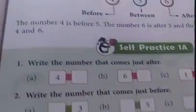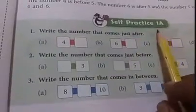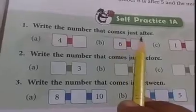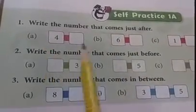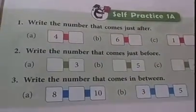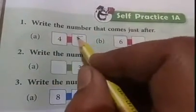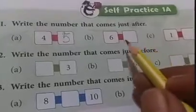Come to the exercise. Self practice exercise 1A. Write the number that come just after. So here in A it is given 4. So you know that after the 4 which number has to come, it is 5.